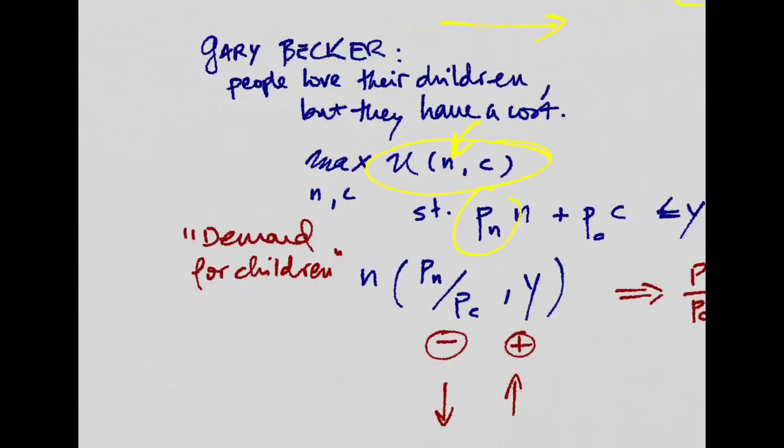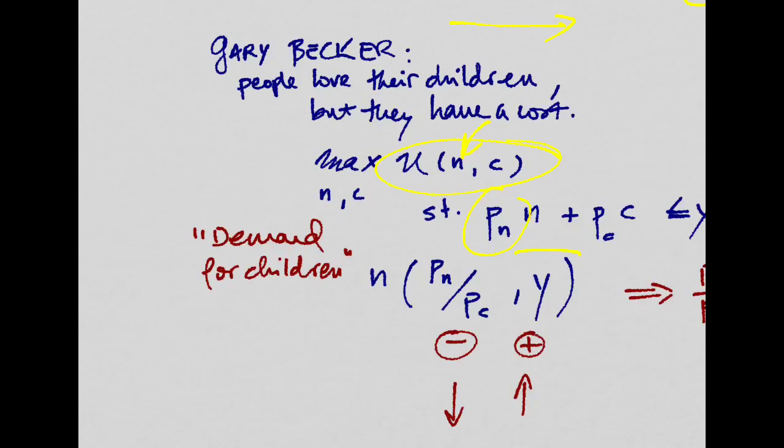So in principle, you might think of a demand for children. Yes, when you're richer, you can have more children, which is kind of like the Malthusian theory, right? But also, you have to take into account this cost. Whenever the cost of having children increases, demand for children decreases.